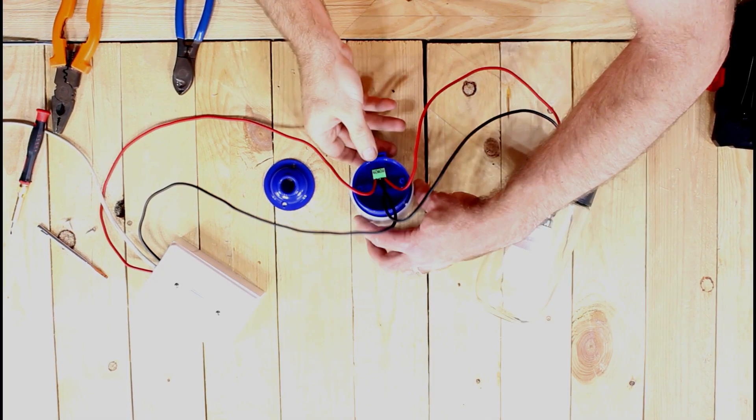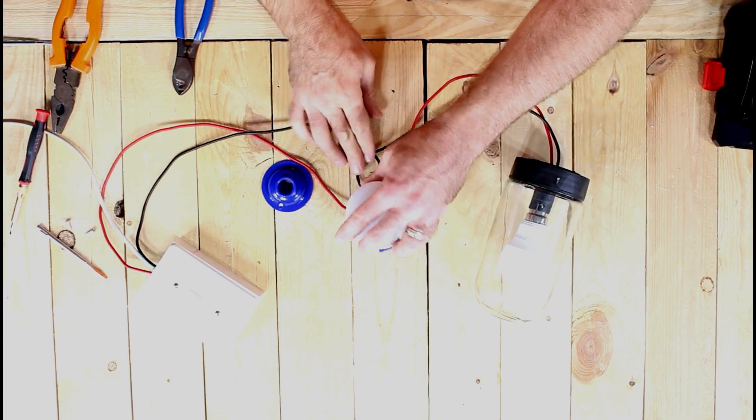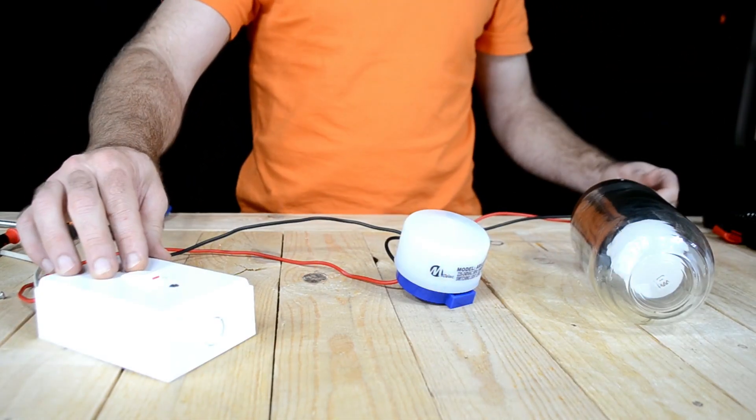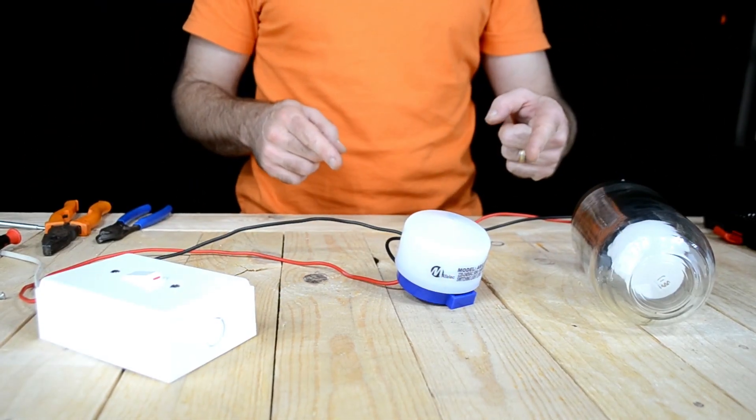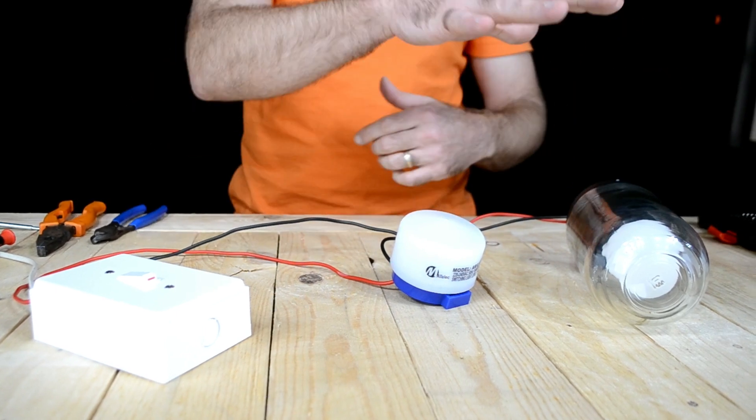Now we're going to flip this over. Let's switch it on. You see the light went off. So it doesn't want to come on. There's too much ambient light.